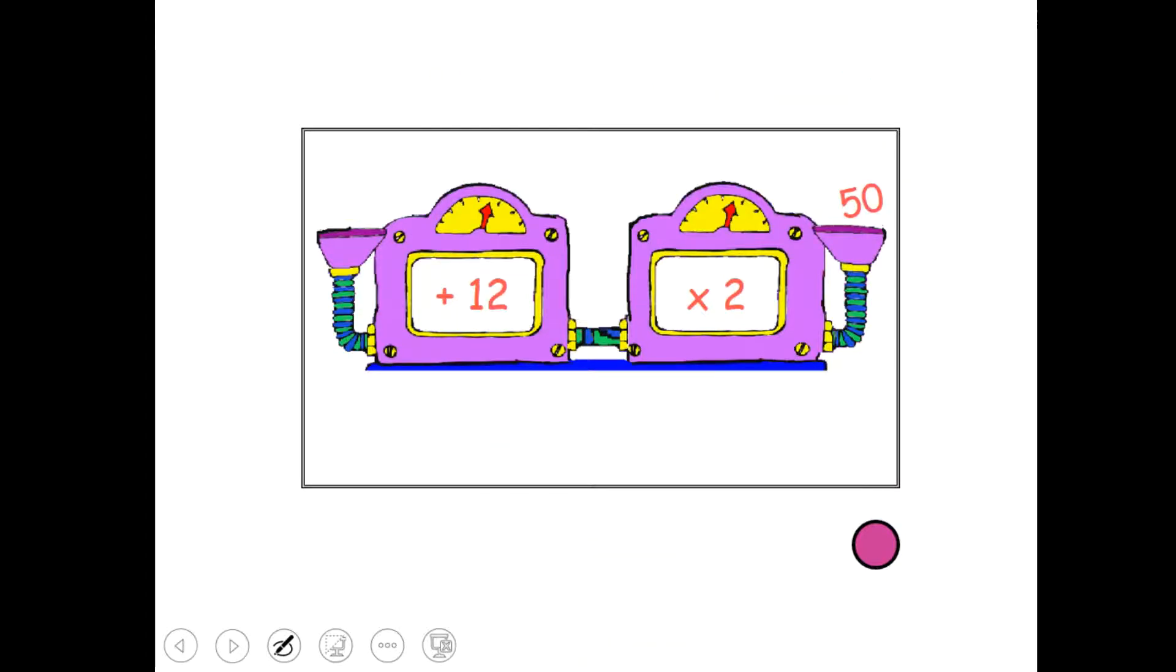Last one then for you to try. Okay, so I want you to work out what the input is this time. So this is going backwards. And then again, try and represent this algebraically. So x and y. Although obviously in this case, we already know what the output is. You need to go backwards.